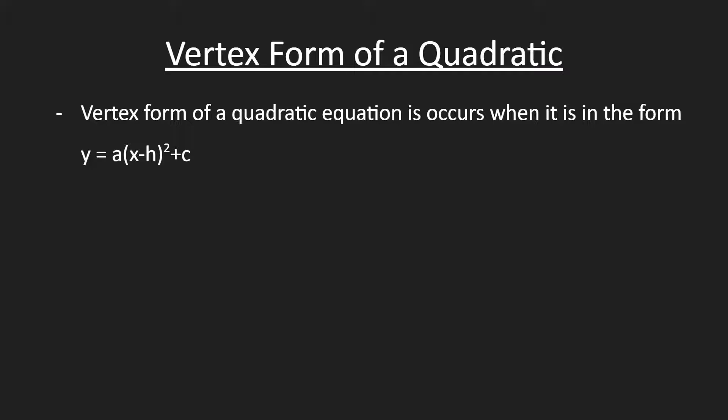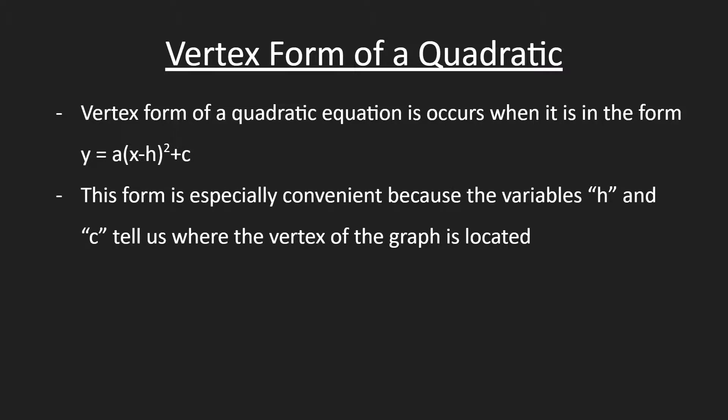Let's talk about the vertex form of a quadratic. The vertex form of a quadratic occurs when it is in the form y equals a times x minus h all squared plus c. This form is especially convenient because the variables h and c tell us where the vertex of the graph is located.